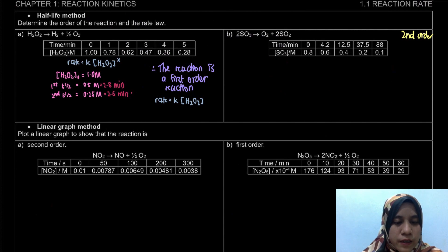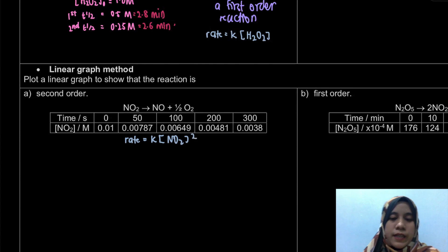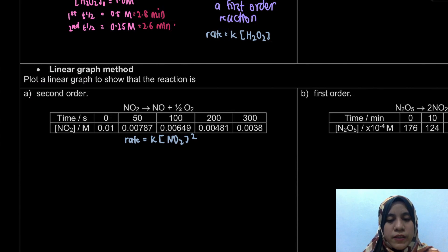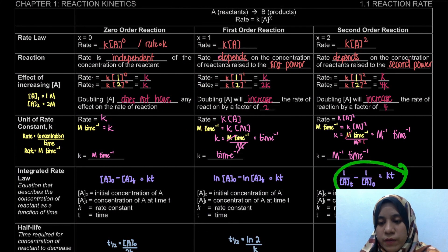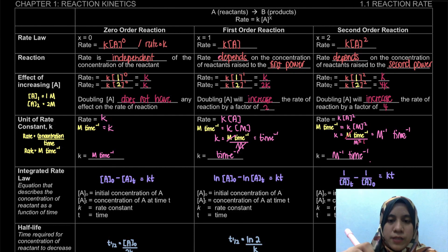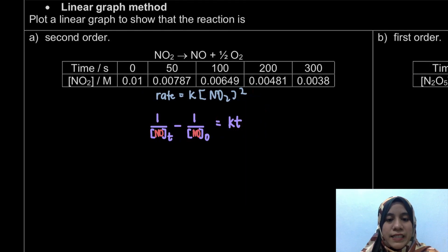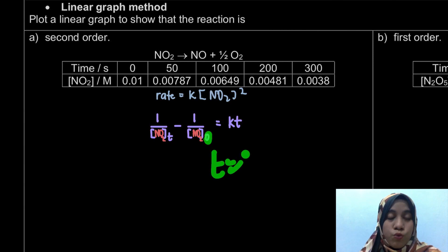For example A, we are asked to show that the reaction is second order. First, we write the rate law: rate = k[NO2]^2. Since this is a second order reaction, the integrated rate law is: 1/[NO2]t − 1/[NO2]₀ = kt. Because the reactant is NO2 specifically, we replace A with NO2 throughout the equation.